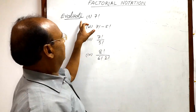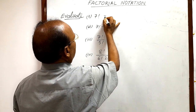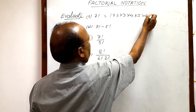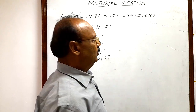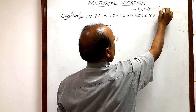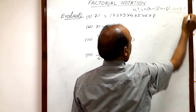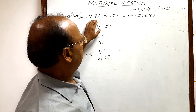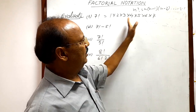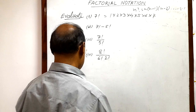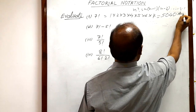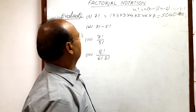The first question is 7 factorial. We know that 7 factorial can be written as 1 × 2 × 3 × 4 × 5 × 6 × 7, since n factorial equals n × (n−1) × (n−2) × ... × 2 × 1. After multiplying these numbers we get the result: 7! = 5040.